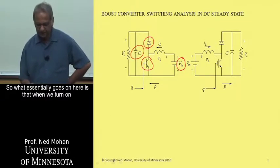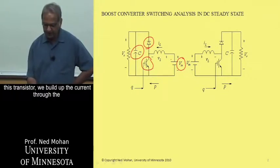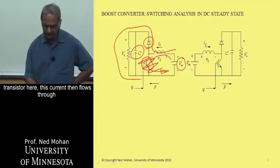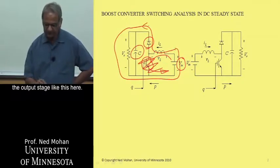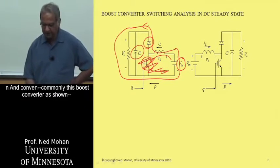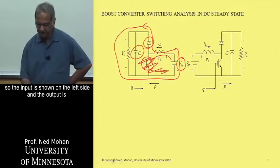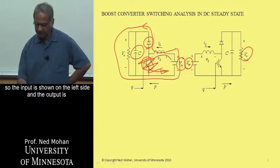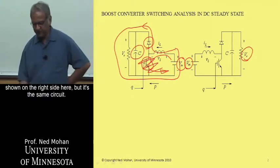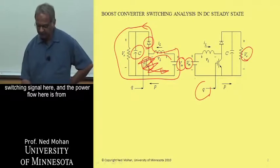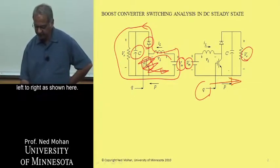So what essentially goes on here is that when we turn on this transistor, we build up the current through the inductor in this direction, and when we open this transistor here, this current then flows through the output stage like this here. Commonly, this boost converter is shown as shown here, flipped around so the input is shown on the left side, and the output is shown on the right side. The transistor is controlled by this switching signal, and the power flow is from left to right.